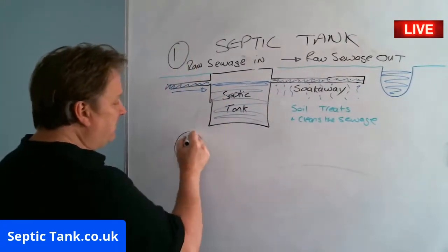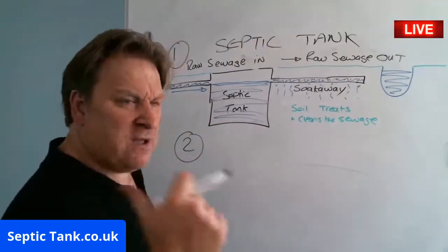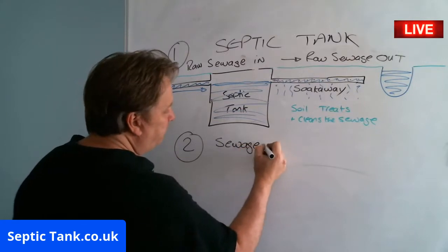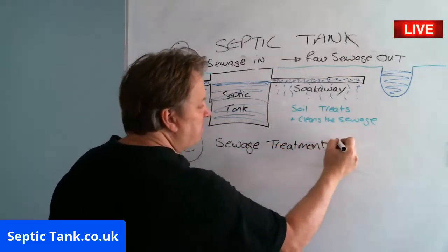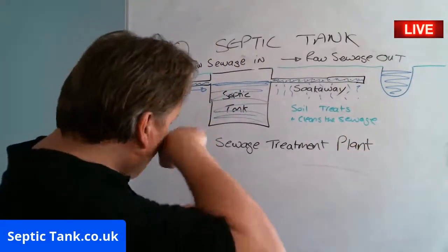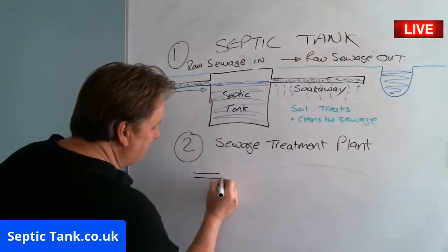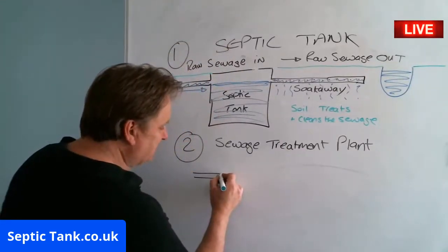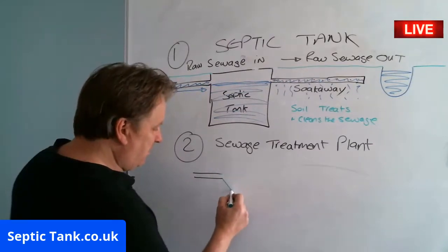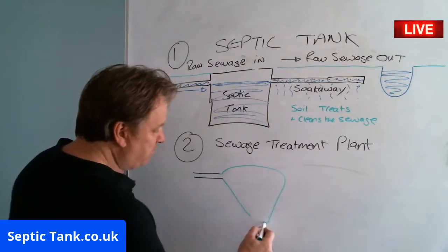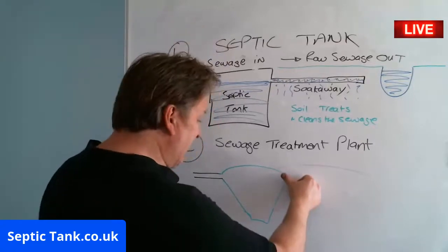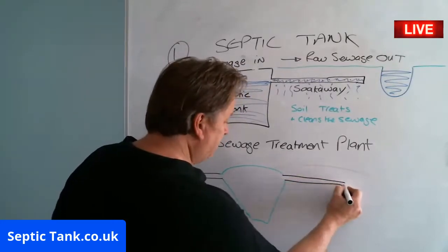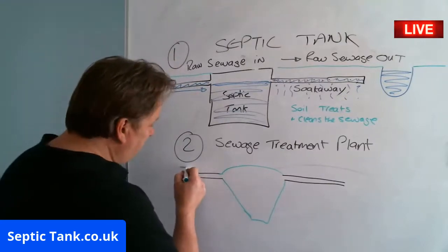Number two — now I'm going to draw a sewage treatment plant. Again we've got a pipe coming in, but I'm going to give the sewage treatment plant a different colour — they're normally green for some reason. I'll give you a typical shape of a sewage treatment plant. That's what some of them look like. You've got your pipe in, your pipe out, and a green lid because it blends in with the grass.